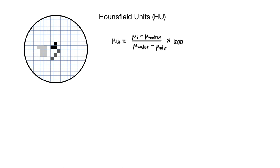This might seem like an arbitrary definition, but it does tie these units to some real physical measured materials. The Hounsfield unit scales linearly with mu — it goes up as mu goes up in a linear fashion.